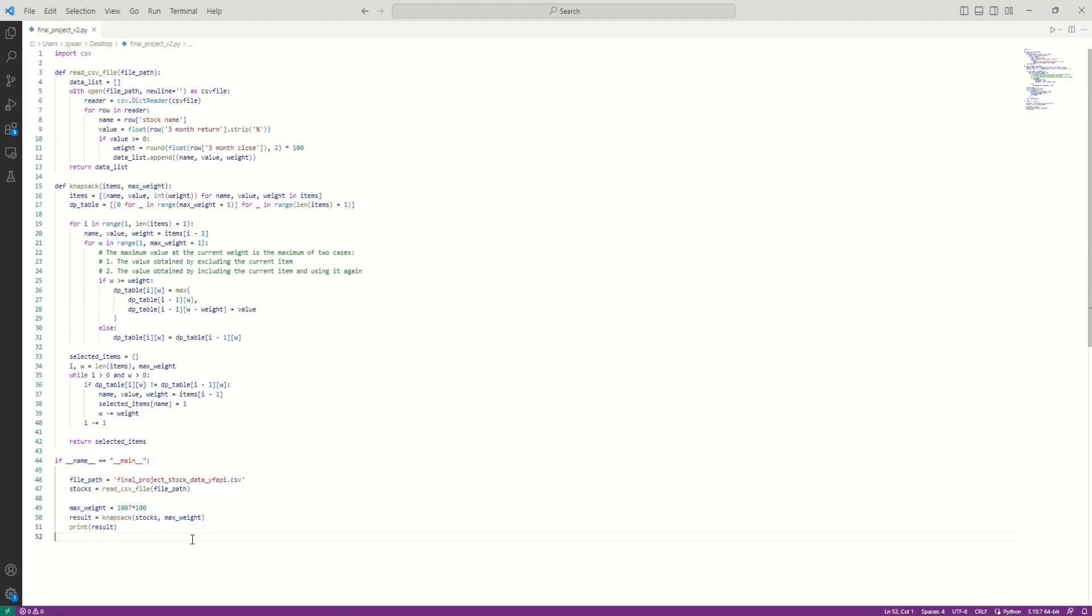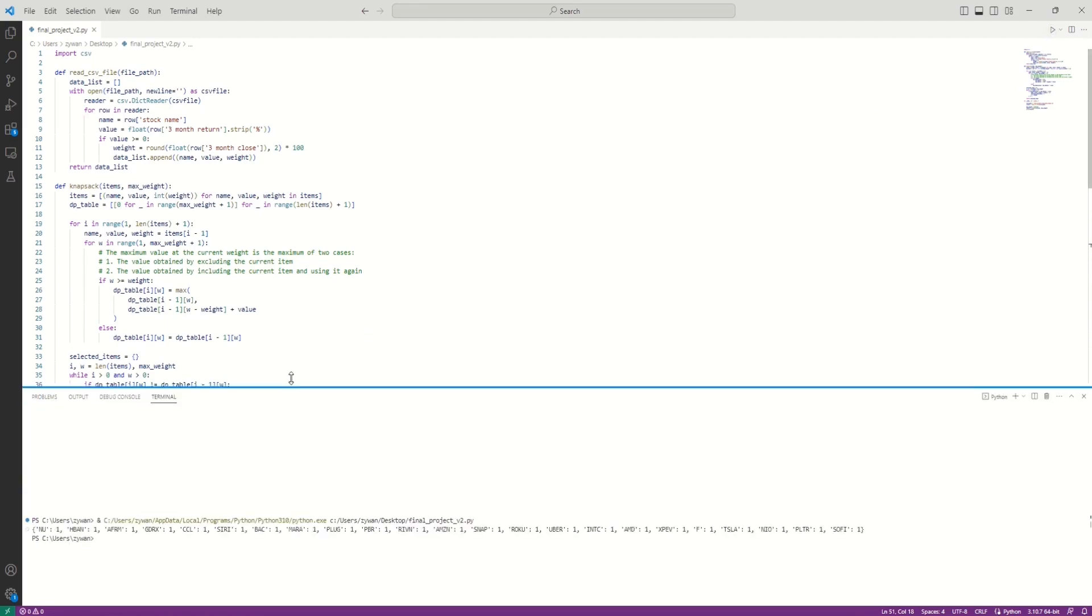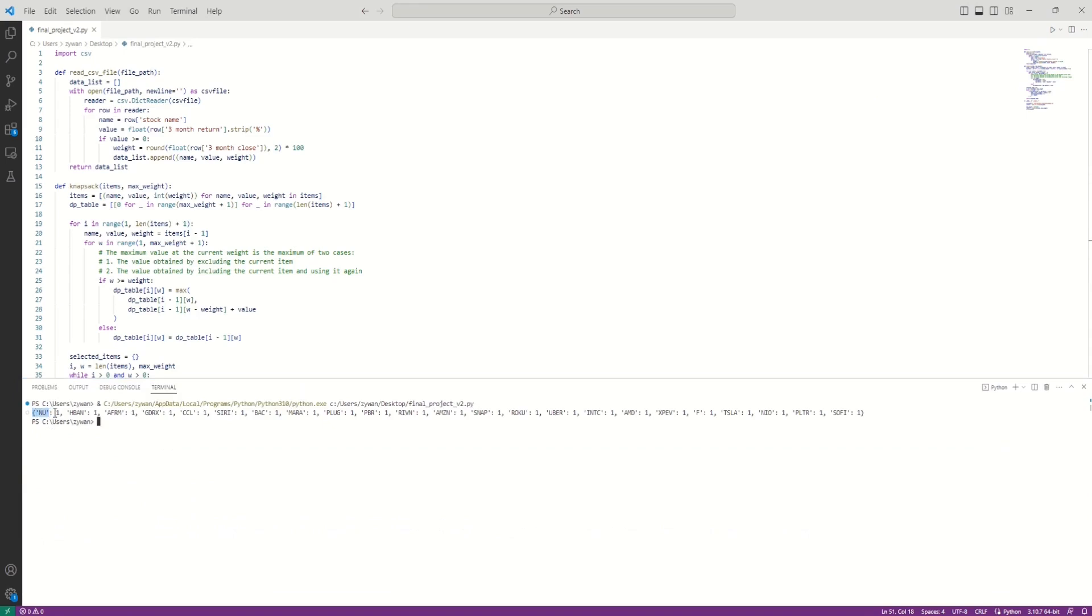In our main function, we are specifying our file paths for the CSV file. We run the readFile function to get the data that we want. And then we specify a maximum weight. We're multiplying it by 100 here, again, just to align it with the weight, which we multiply by 100 to get to integers. And then we have our results by running the knapsack function. And let's see what the result turns out to be. And here, as you can see, we have our stock names. And one represents the quantity, which we're only having one unit of each stock in our knapsack. And these ones are indeed the ones that have the best return values.